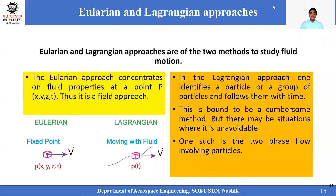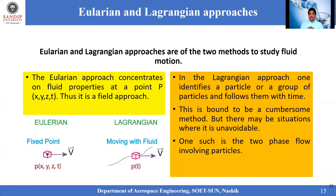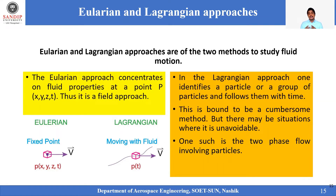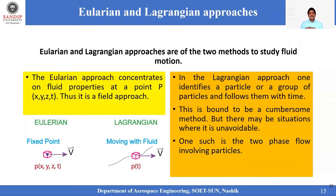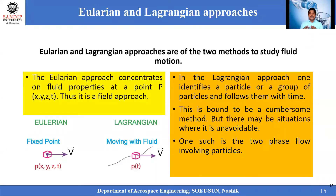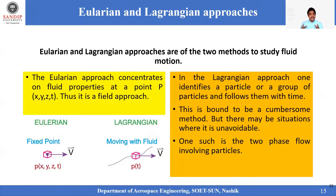Generally, for fluid flow analysis we prefer to go with the Eulerian approach as the easier method. The Lagrangian approach compared to the Eulerian approach is a little bit more complex, because the control volume or point itself is moving with respect to time, making it a cumbersome method. However, in both approaches, your result is going to be the same.